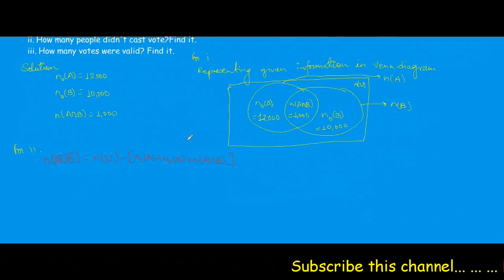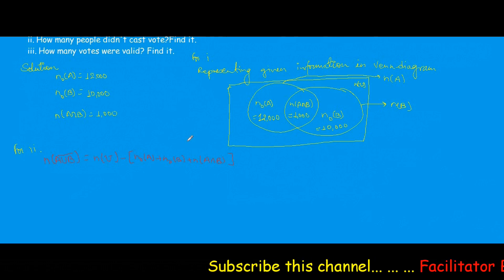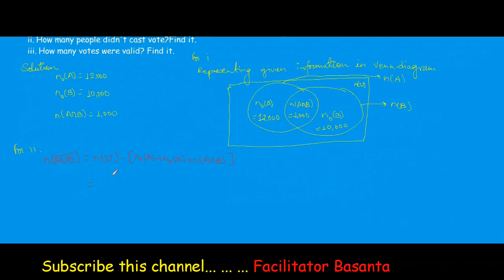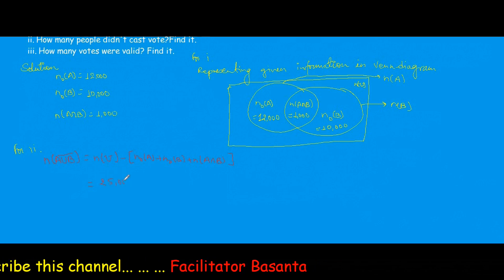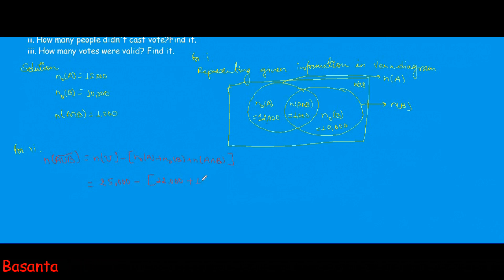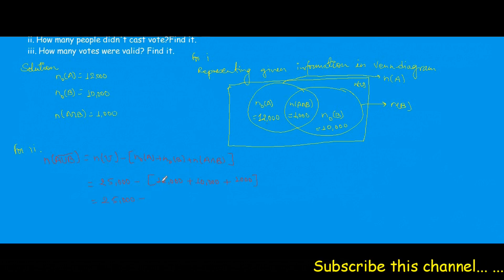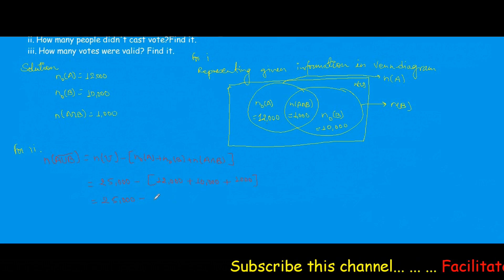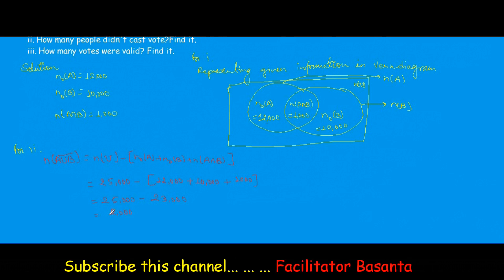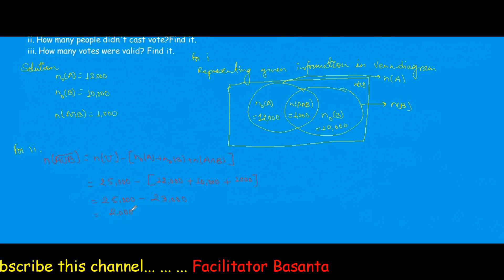Using the Venn diagram, this equals N(U) minus [N(only A) + N(only B) + N(A intersection B)], which is 25,000 minus [12,000 + 10,000 + 1,000]. That gives 25,000 minus 23,000, which equals 2,000. So 2,000 people did not cast their vote.